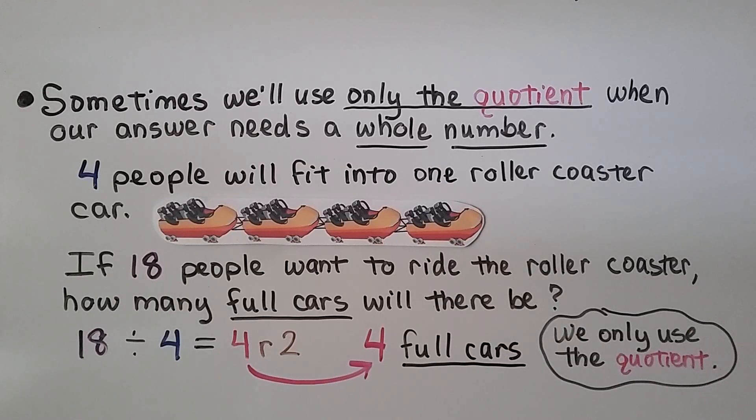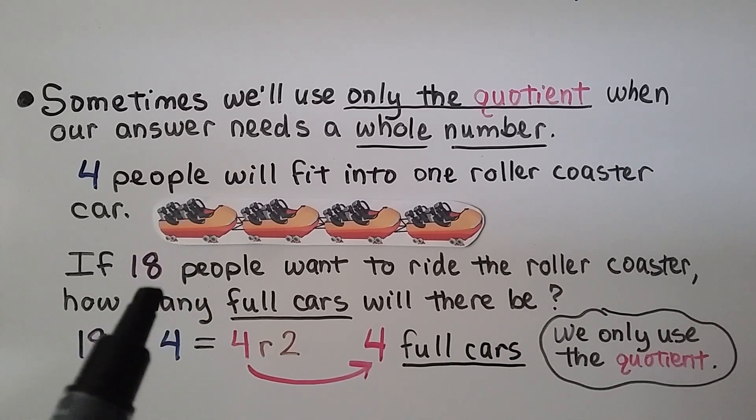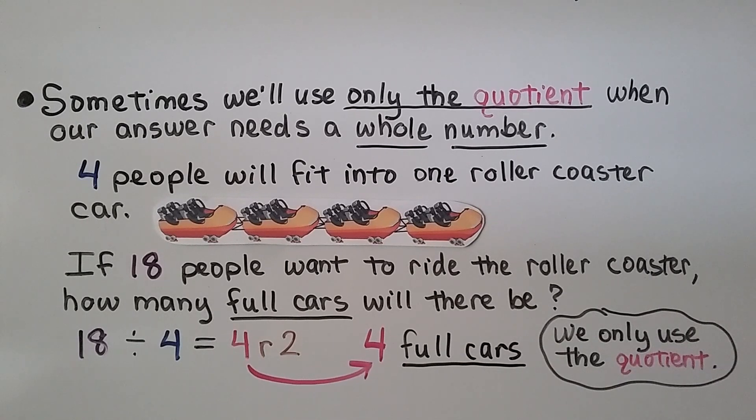Sometimes we'll only use the quotient when our answer needs a whole number. So, 4 people will fit into 1 roller coaster car. If 18 people want to ride the roller coaster, how many full cars will there be? Well, there's 18 people. 4 people fit in each car. We do 18 divided by 4. That's 4 full cars. 4 times 4 is 16. We have a remainder 2. This way, we only use the quotient. They don't want half cars. They want 4 full cars with 4 people in them. So that would be 4 full cars. And 2 people would have to wait until other people wanted to go to make a full car, wouldn't they?